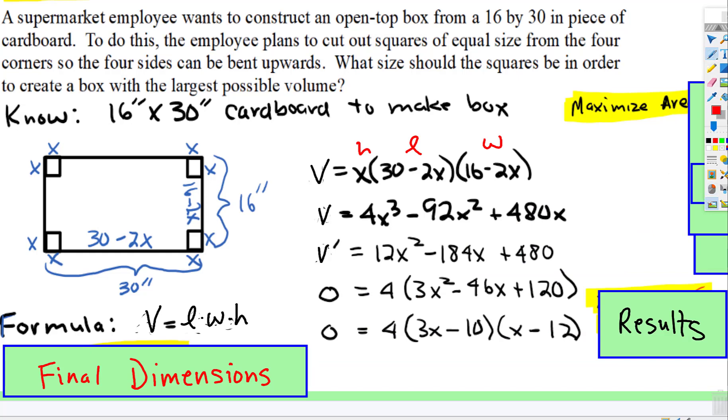So, when you factor, the 4 remains on the outside, and this factors to 3x subtract 10, x subtract 12, and look it, you're going to get two answers. You're going to get x is equal to 10 thirds, which is 3 and a third inch, and x is equal to 12 inches.